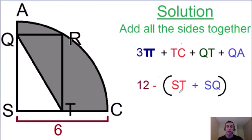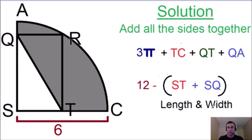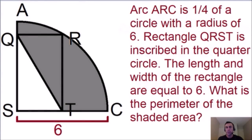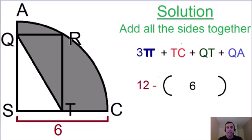This simplifies to 12 minus the sum of ST and SQ. ST and SQ are the width and length of the rectangle respectively. In the original problem, it was given that the length and width of the rectangle sum to six. So we plug in six for ST plus SQ, giving us 12 minus 6, which equals six. So TC plus QA equals six.